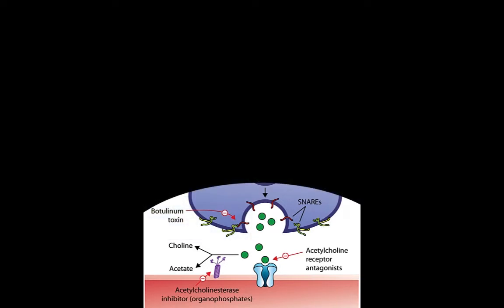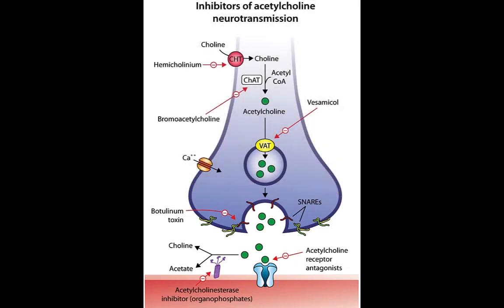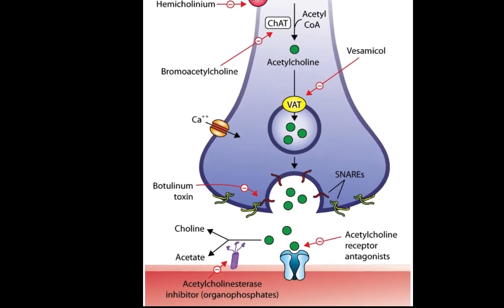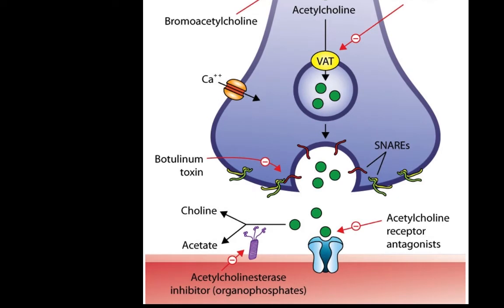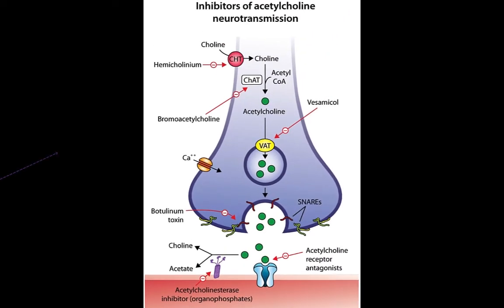Acetylcholine is released and works in the postsynaptic membrane by attaching to acetylcholine receptors. The action of this could be stimulation of muscle contraction. We do not want this to continue, because after contraction we want the muscle to relax. There is an enzyme called acetylcholinesterase, which dissolves acetylcholine from its receptors and splits it into acetate and choline. Choline is then reabsorbed into the presynaptic neuron to be recycled.